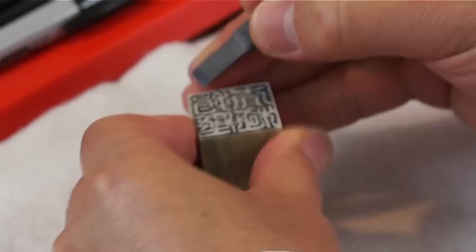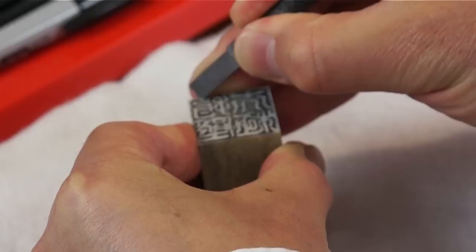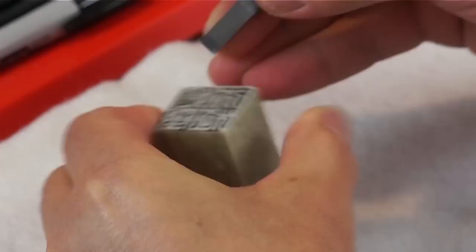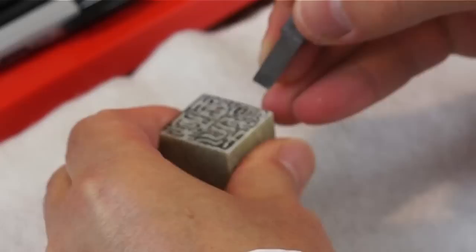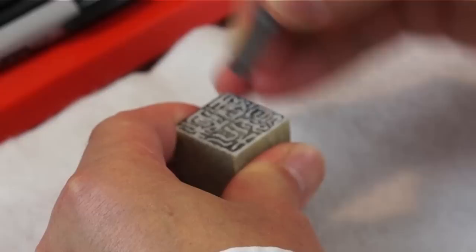So we start from the first character, zhi means finger. You can see I turn the stone when I make a curve. This is the easiest. Instead of turning the hand around, it's very difficult.